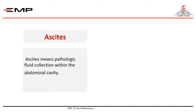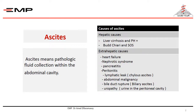Ascitis, which is pathologic fluid collection within the peritoneal cavity, may be due to hepatic causes, mainly liver cirrhosis and portal hypertension, as well as Budd-Chiari and veno-occlusive disease, in which there is a congested liver due to hepatic venous outflow obstruction leading to transudation of ascitic fluid.